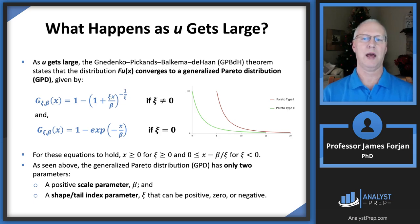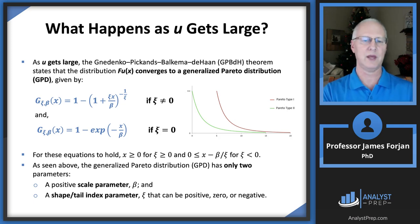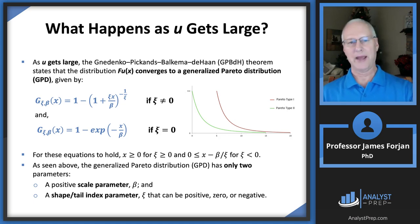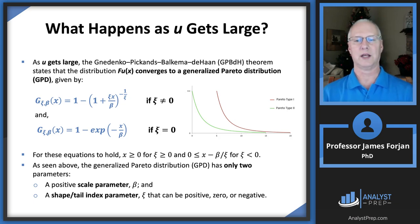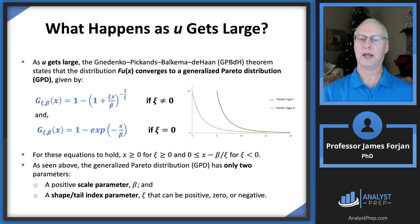As the threshold u gets larger, the GPD Theorem states that the distribution of excess losses converges to a Generalized Pareto Distribution (GPD), given by functions depending on xi. The GPD has only two parameters: a scale parameter beta, which must be positive, and the shape parameter xi, which can be positive, negative, or zero — just as discussed before with the GEV.